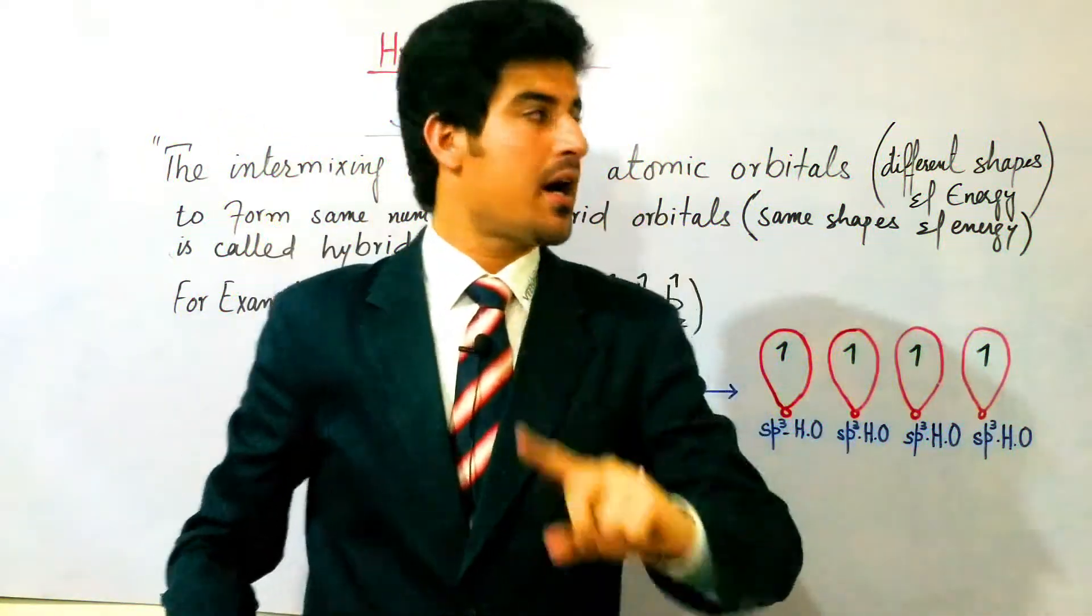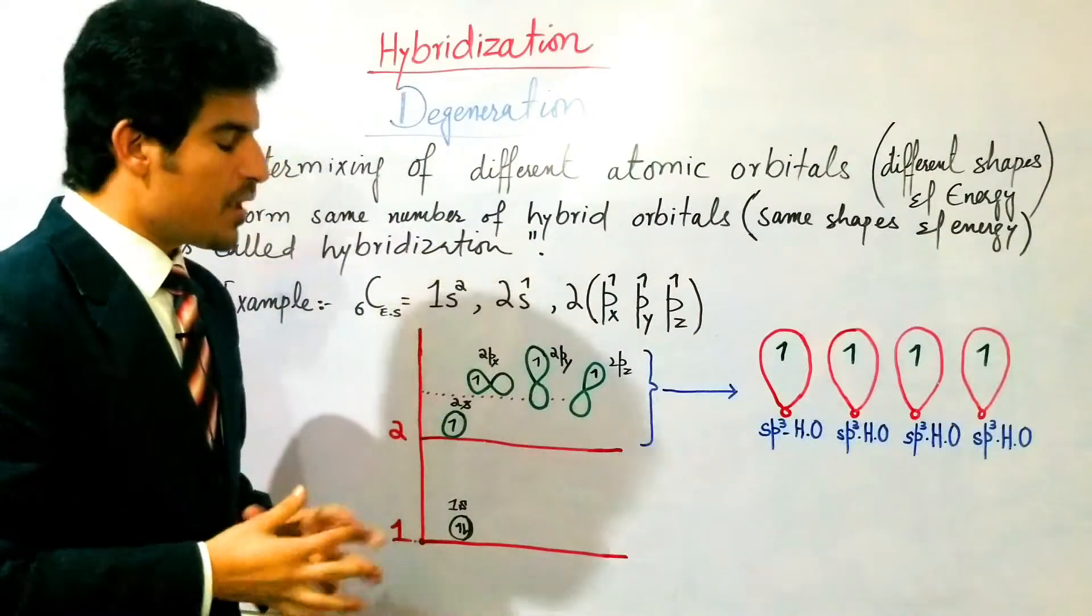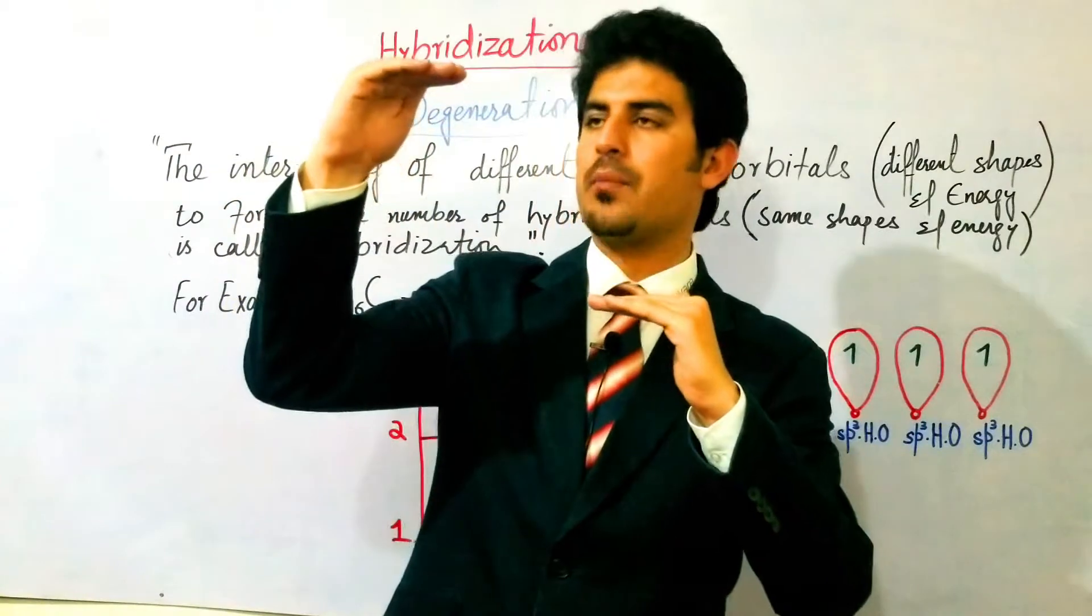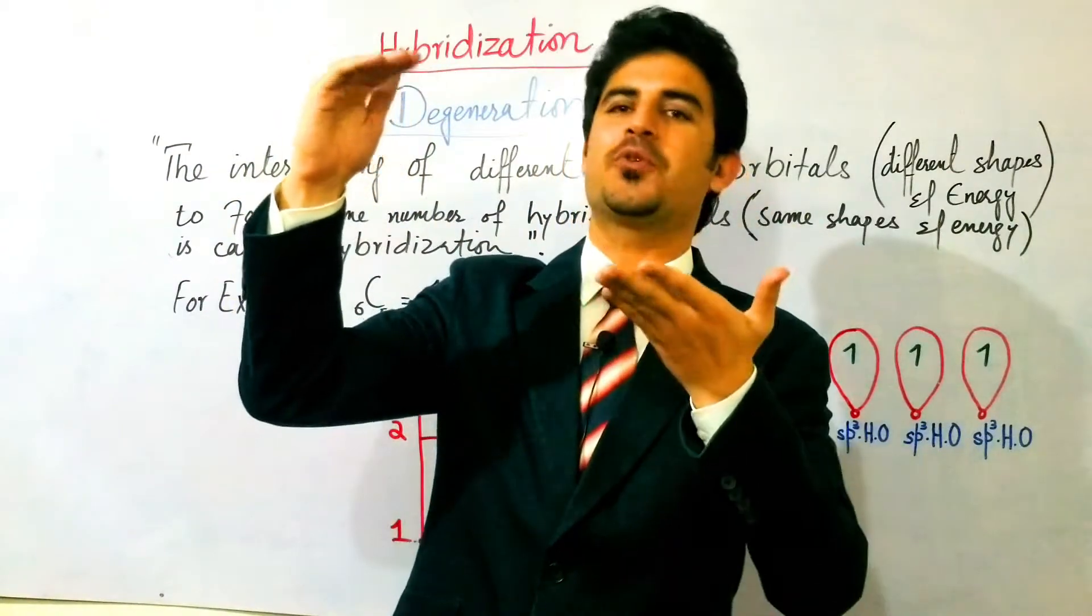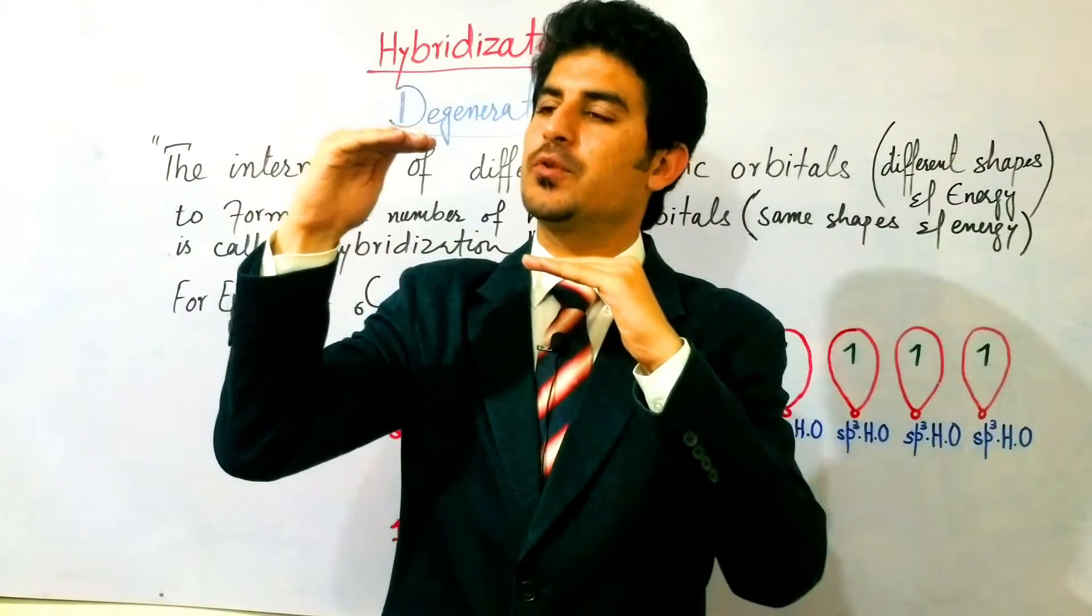Remember, in hybridization, different atomic orbitals like s, px, py, pz will be found. When these orbitals intermix, they form hybrid orbitals.